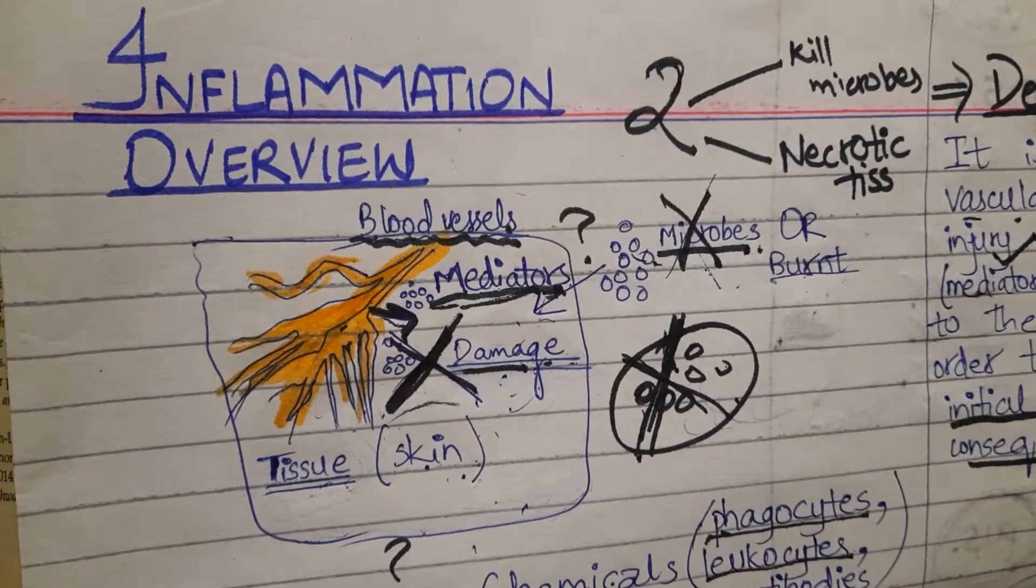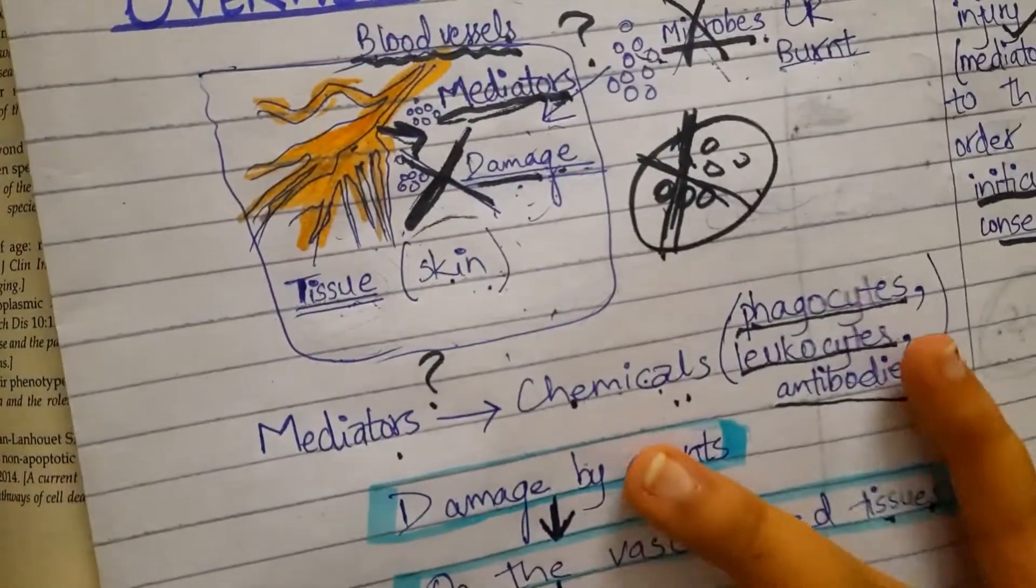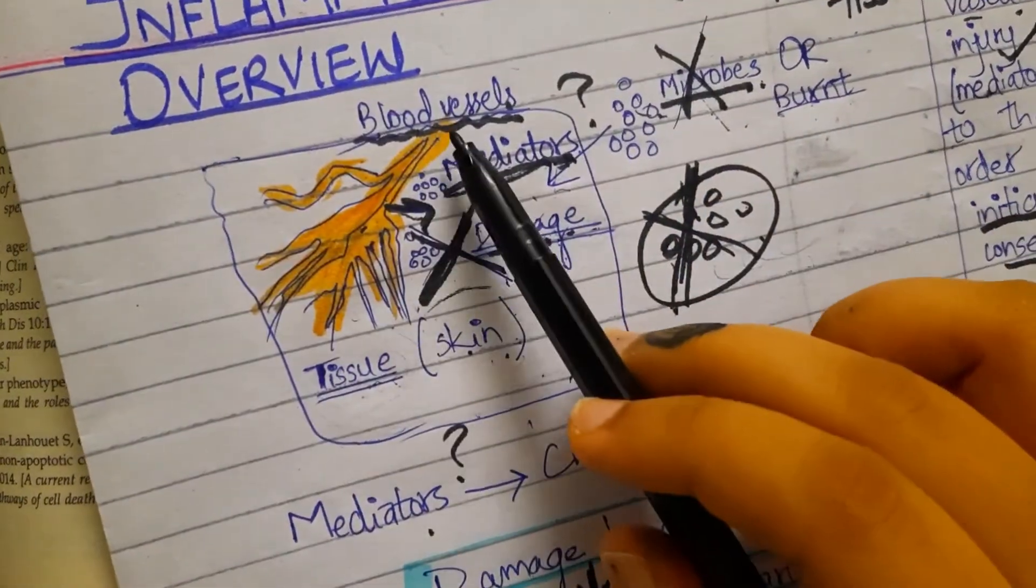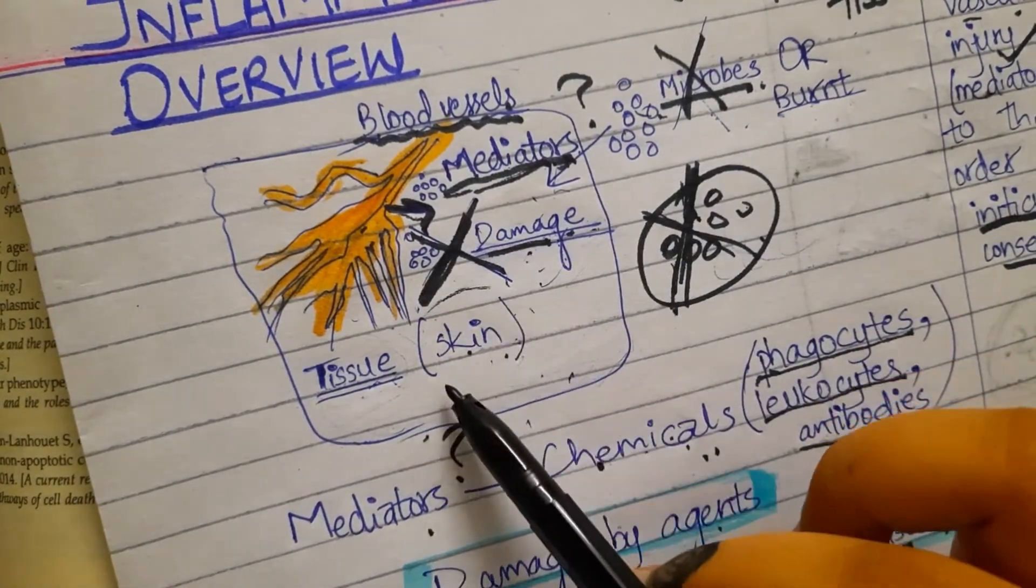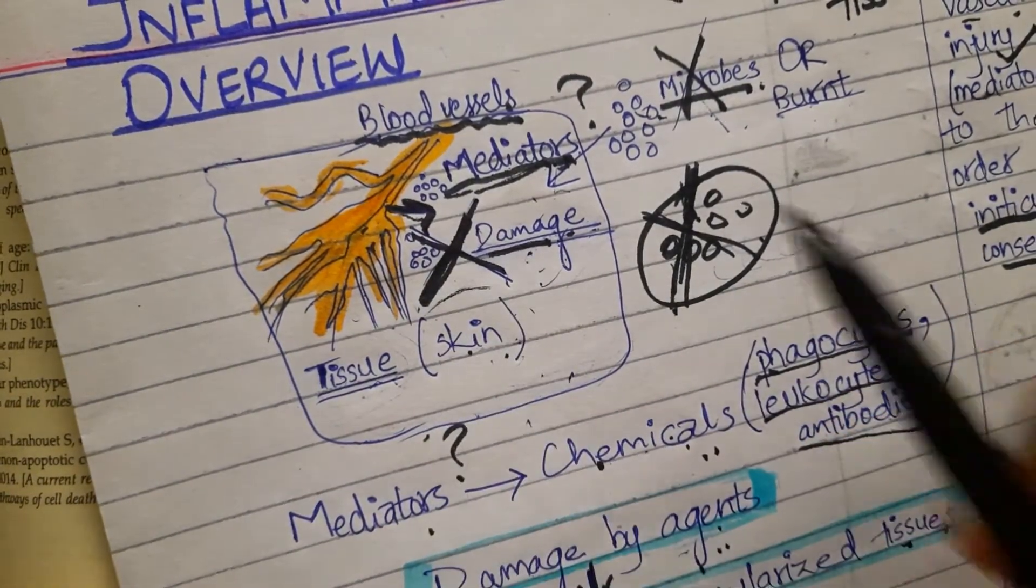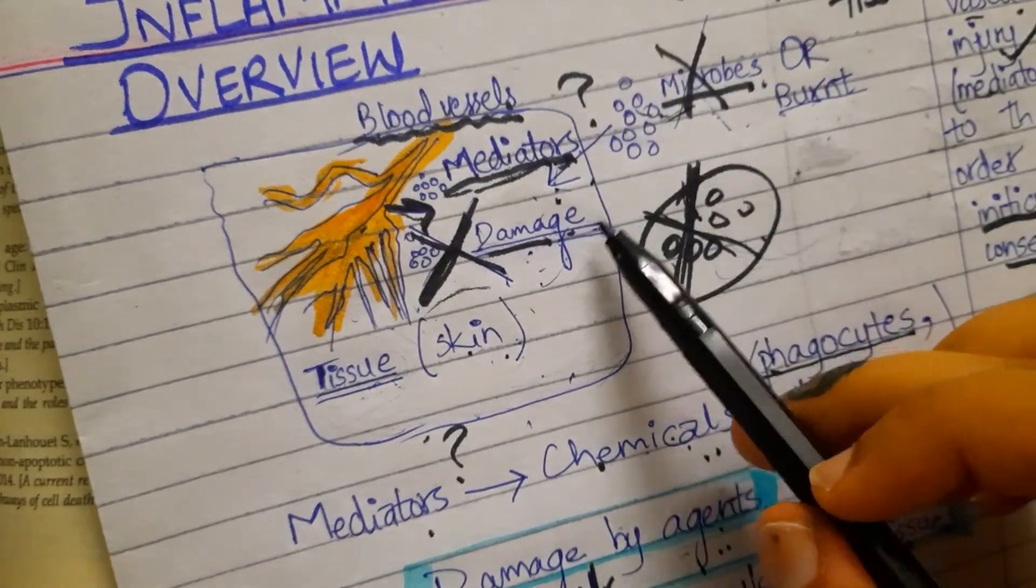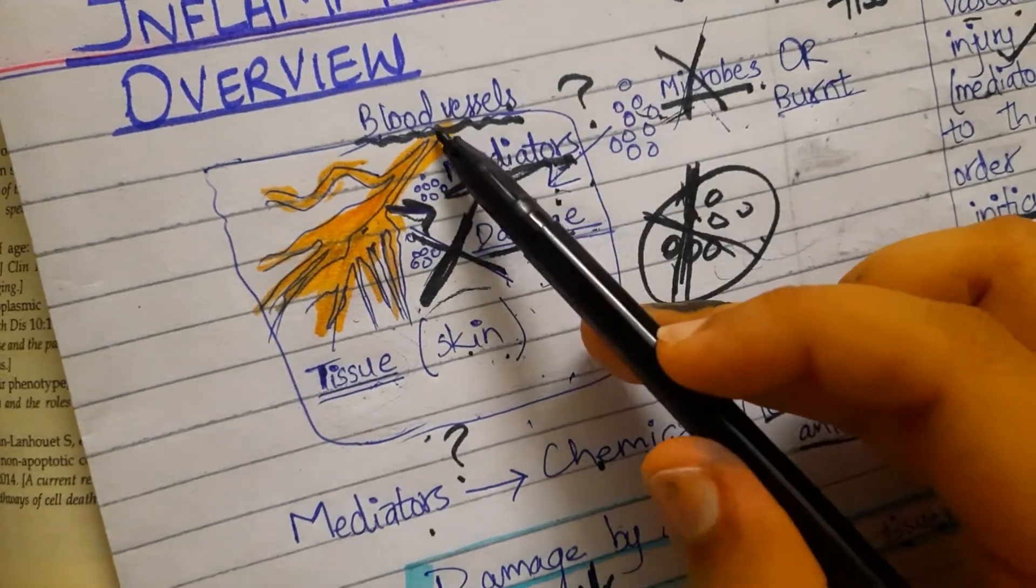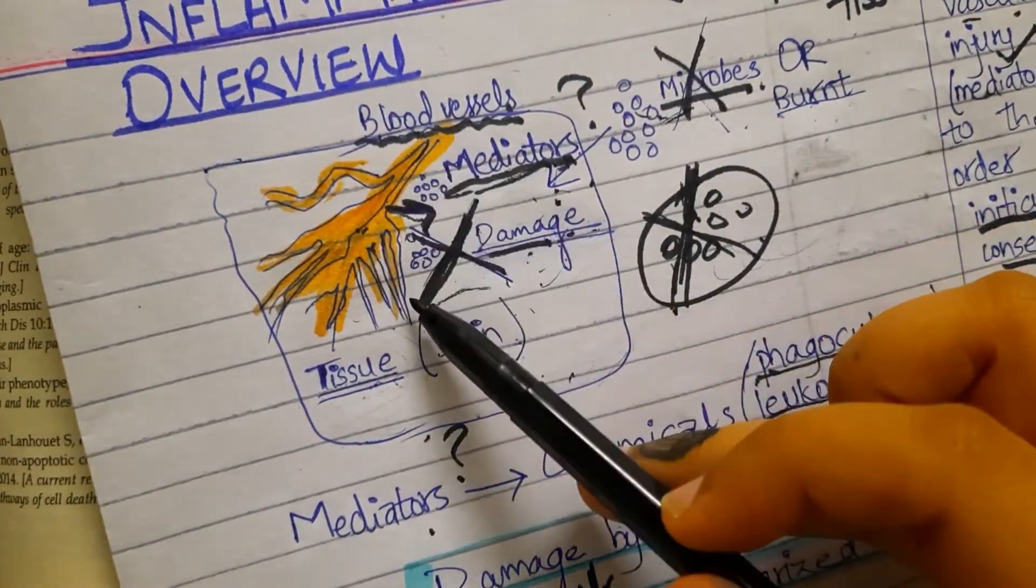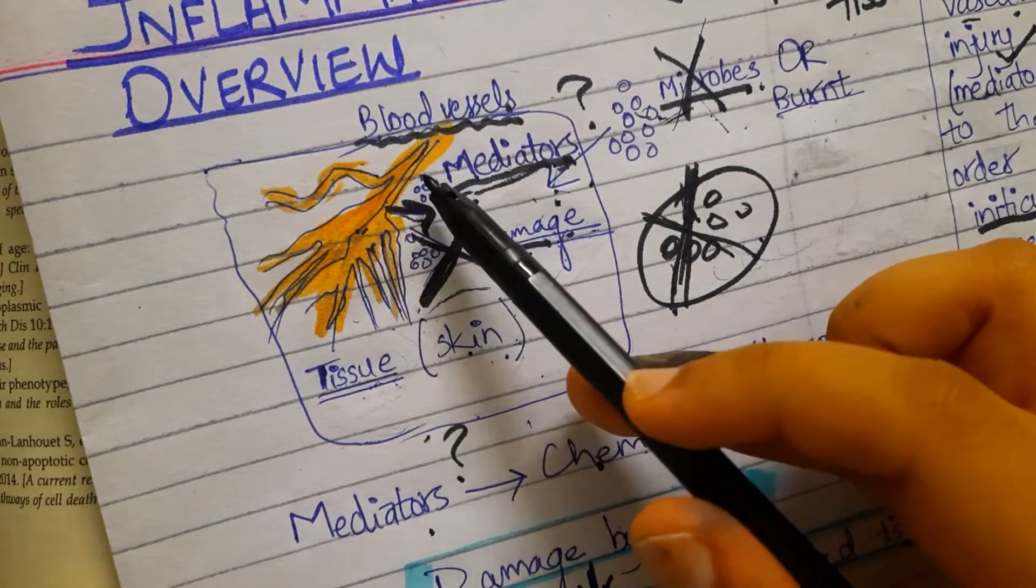Assalamualaikum, so today I am going to give an overview of inflammation. Inflammation is basically, for example, consider that this box is a tissue from any part of the body, let's say skin. So whenever microbes enter the skin, or for instance the skin is burnt, what happens is that the blood vessels which are present inside the skin release mediators.